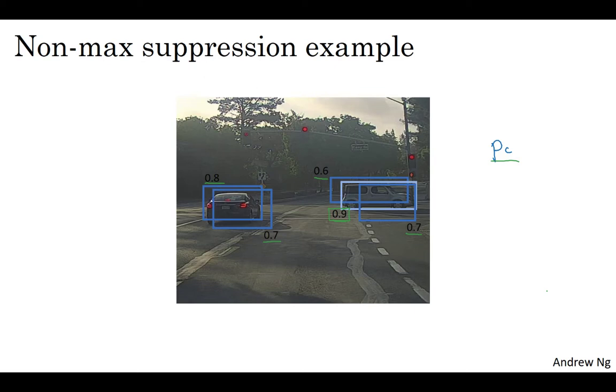Having done that, the non-max suppression part then looks at all of the remaining rectangles and all the ones with a high overlap, with a high IOU with this one that you've just output will get suppressed. So those two rectangles with the 0.6 and the 0.7, both of those overlap a lot with the light blue rectangles. So those you're going to suppress, I'm going to darken them to show that they're being suppressed.